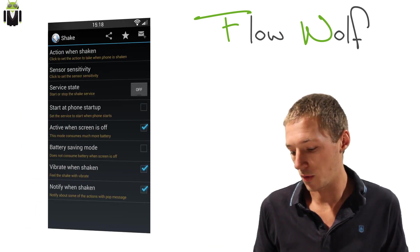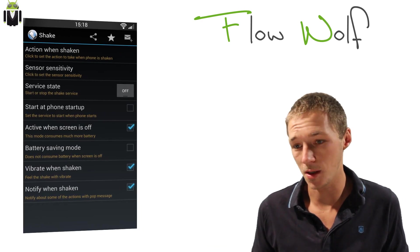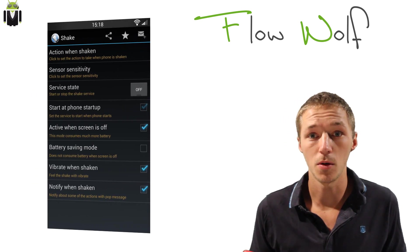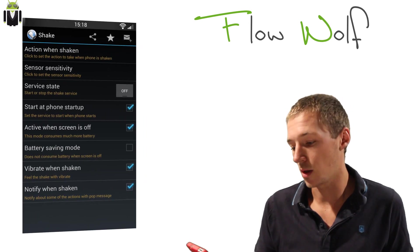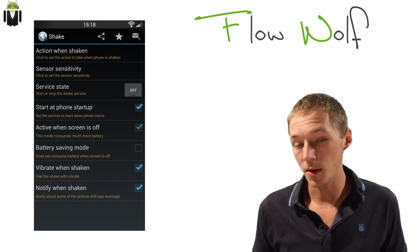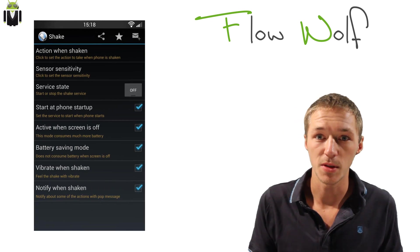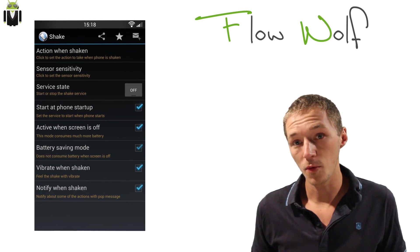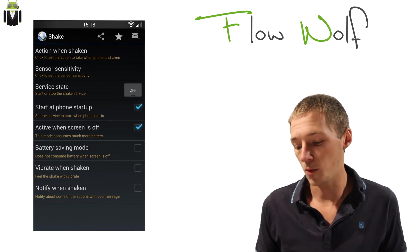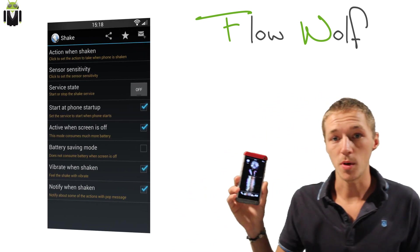Shake can activate when the screen is off. You can use it in battery saving mode, and you can also enable vibrate when shaken and notify when shaken. So let's go. If I do a horizontal shake like that, the flash turns on.